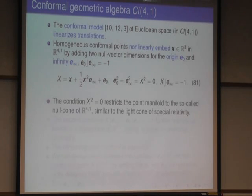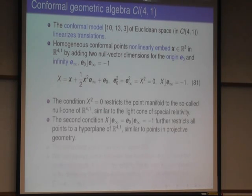So this condition restricts the point manifold to the so-called null cone, similar to special relativity. And the other restriction here cuts out a three-dimensional sub-manifold. That's a hyperplane condition in five-dimensional space. So the remaining manifold is three-dimensional.